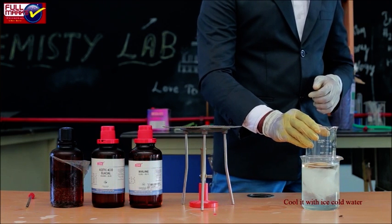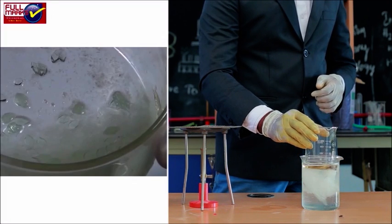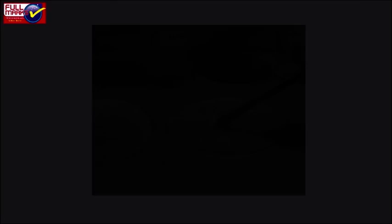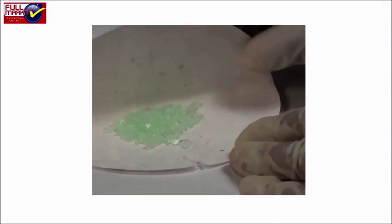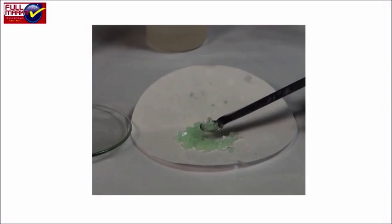Wash the crystals with cold water to remove traces of alkali. As the filtrate cools down, shining flakes of acetanilide are obtained.